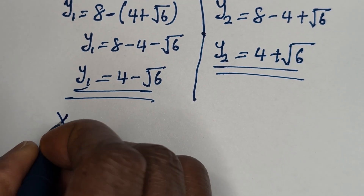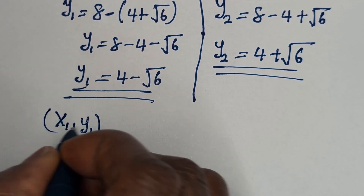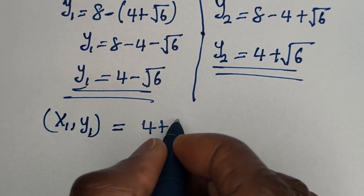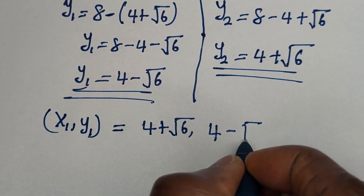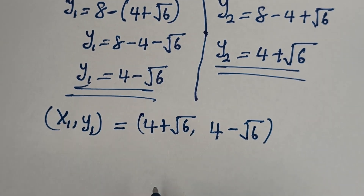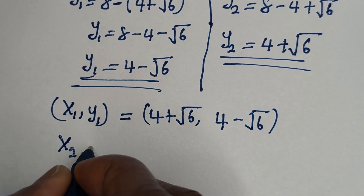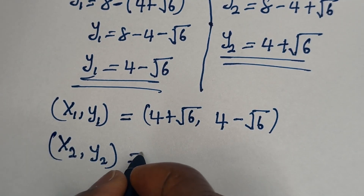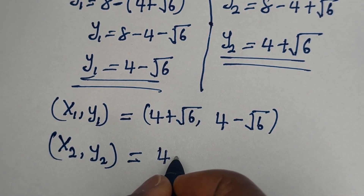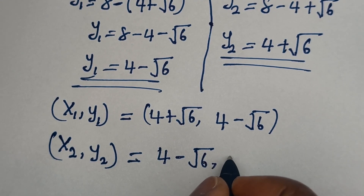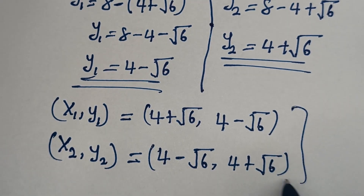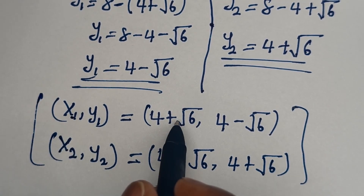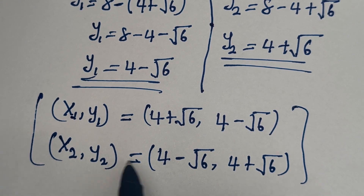Therefore our final answer: (x1, y1) is equal to (4 plus square root of 6, 4 minus square root of 6), and (x2, y2) is equal to (4 minus square root of 6, 4 plus square root of 6). You can see that the value of y1 here equals the value of x2, and the value of y2 equals the value of x1.